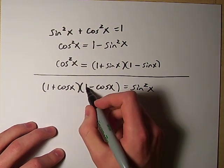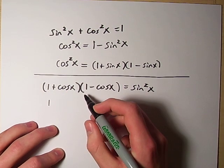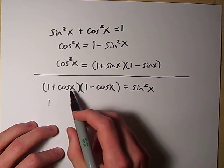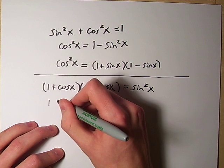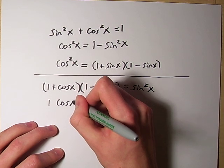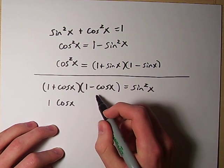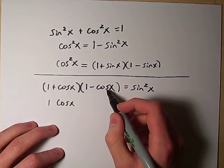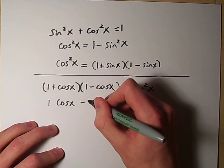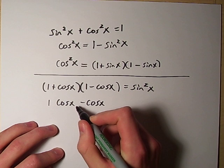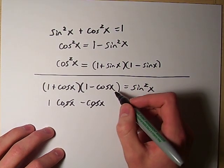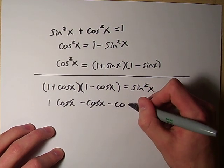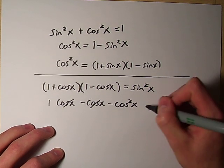Well, 1 times 1 is 1, and then we're going to get cosine x times 1 is cosine x. And then 1 times negative cosine x is negative cosine x. So our middle parts cancel out. Then cosine x times negative cosine x is going to give us a negative cosine squared x.